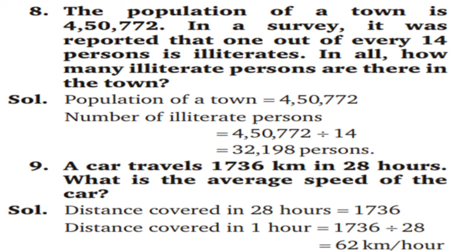9th question: a car travels 1,736 km in 28 hours. What is the average speed of the car? Distance covered in 28 hours = 1,736 km. Distance covered in 1 hour = 1,736 ÷ 28. So our answer is 62 km per hour.